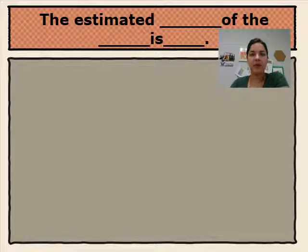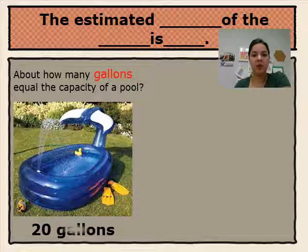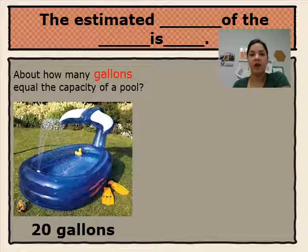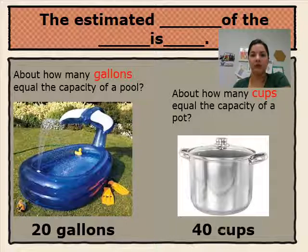We've added another blank to the sentence stem: 'The estimated blank of the blank is blank.' For example, the estimated liquid volume of the pool is about how many gallons? It would take about 20 gallons. So our sentence stem would read: 'The estimated liquid volume of the pool is 20 gallons.' About how many cups equal the capacity of a pot? The estimated liquid volume of the pot is 40 cups.